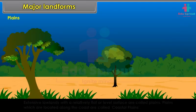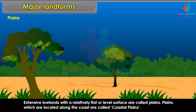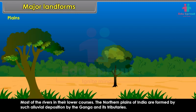Extensive low lands with a relatively flat or level surface are called plains. Plains located along the coast are called coastal plains. The northern plains of India are formed by alluvial deposition by the Ganga and its tributaries.